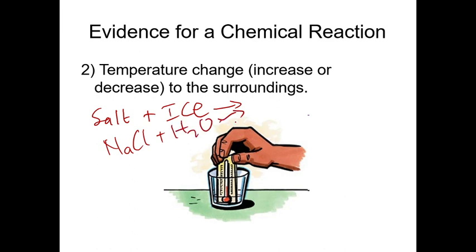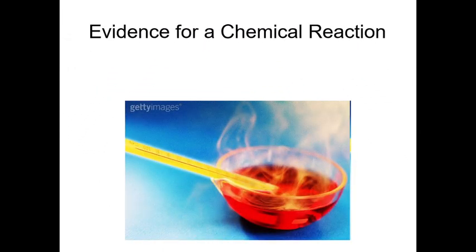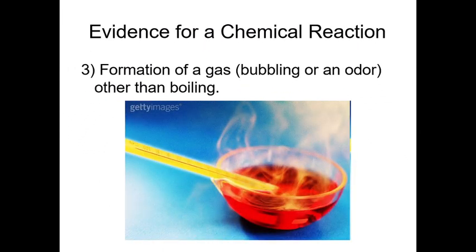Some chemical reactions can increase the temperature — for example, when you react a metal with acid. We call these exothermic or endothermic reactions depending on whether the temperature increases or decreases. The third evidence of a chemical reaction is the formation of a gas.